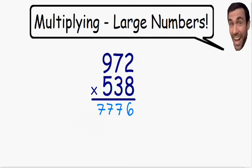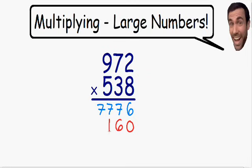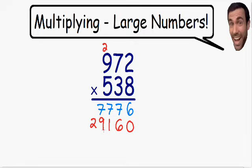Now we are ready to multiply this next number on the bottom, this number 3. This 3 is in the tens place, so we need to start in the tens place. I am going to put a 0 in the ones place so we don't forget. Now we can multiply this 3 times the 2 — 3 times 2 is equal to 6. We put a 6 in this column and there is only one digit so we don't need to carry over. Now we can multiply this 3 times the 7 — 3 times 7 is equal to 21, but there is only enough space for one digit so we need to carry the 2 over. Now we can multiply 3 times 9 — 3 times 9 is equal to 27, plus the 2 that is being carried over. 27 plus 2 is equal to 29, and there is enough space for two digits.